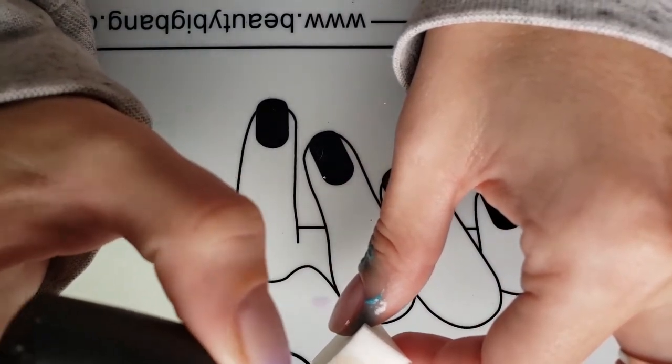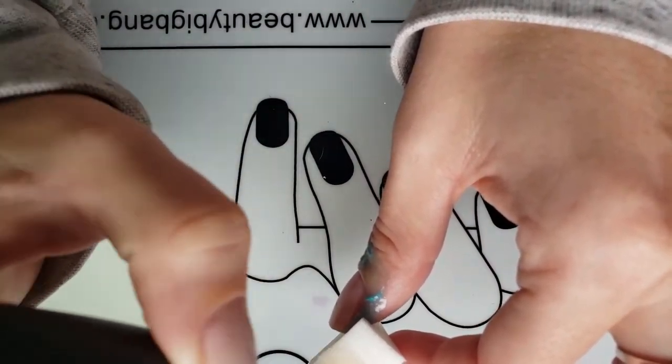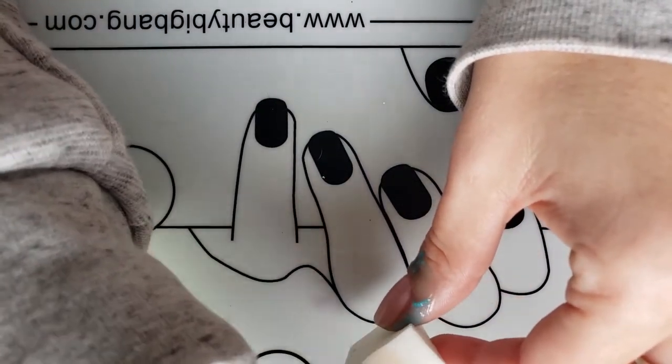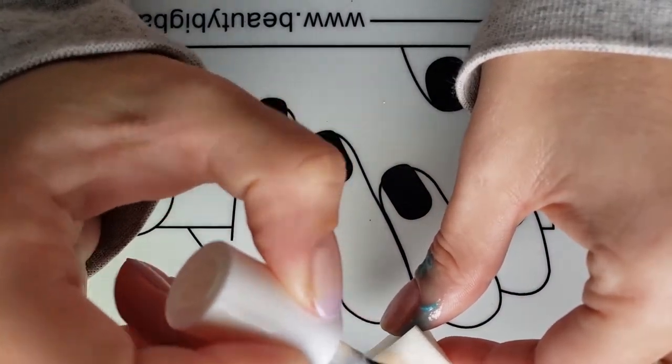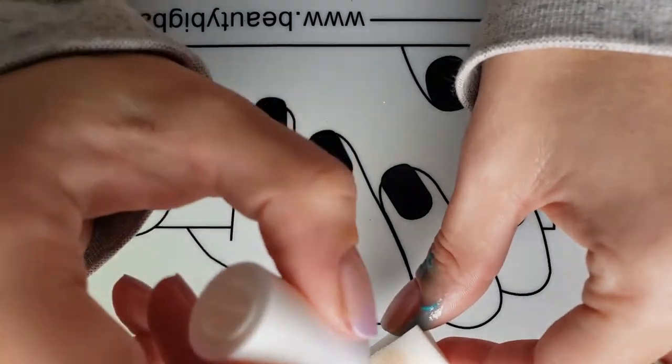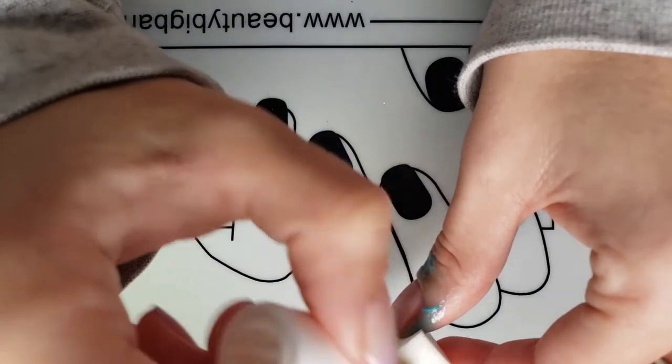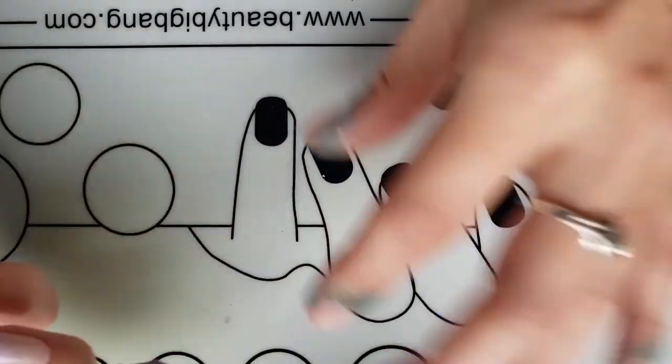You're just going to have to keep building it up. I usually see the color start to come on maybe like three. And then I can really see what I'm doing. But you want to let it dry in between.